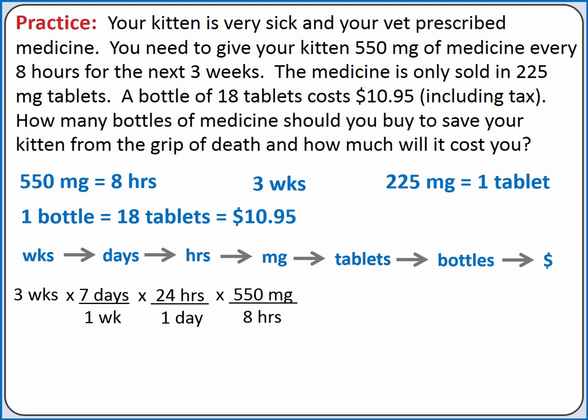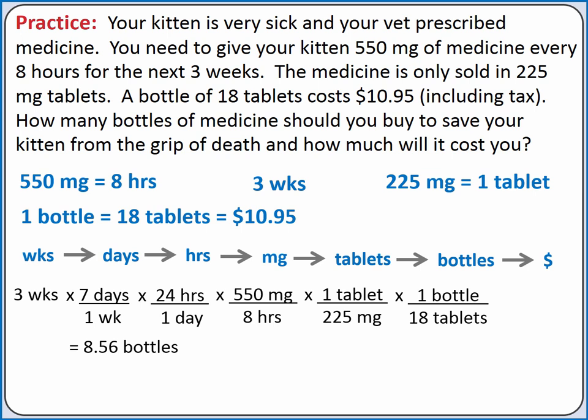Next, we'll multiply by 1 tablet per 225 milligrams of medicine. And finally, 1 bottle divided by 18 tablets. If you put this in your calculator, you would enter it as 3 times 7 times 24 times 550, divided by (8 times 225 times 18). You should get 8.56 bottles.